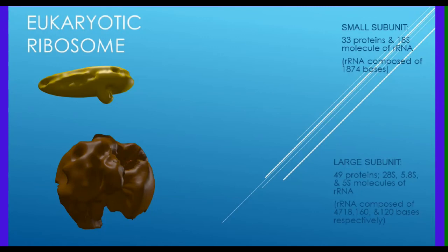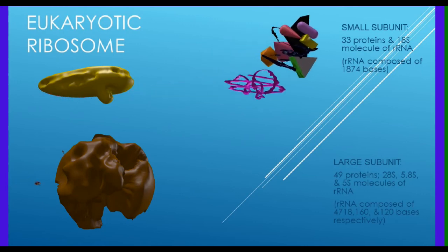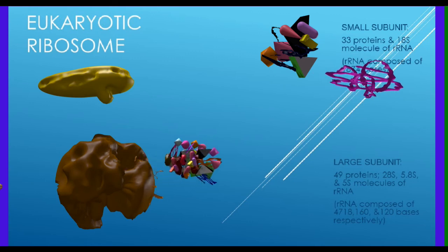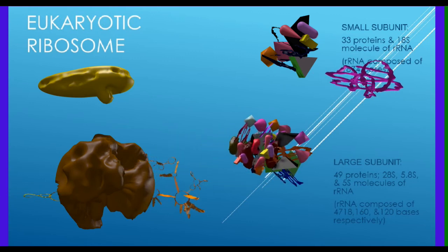In mammals, the large subunit is composed of a 28S molecule of rRNA, a 5.8S molecule of rRNA, and 49 proteins.